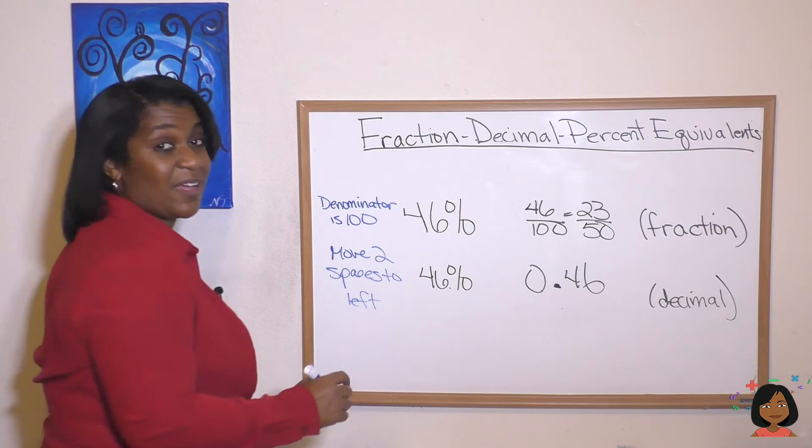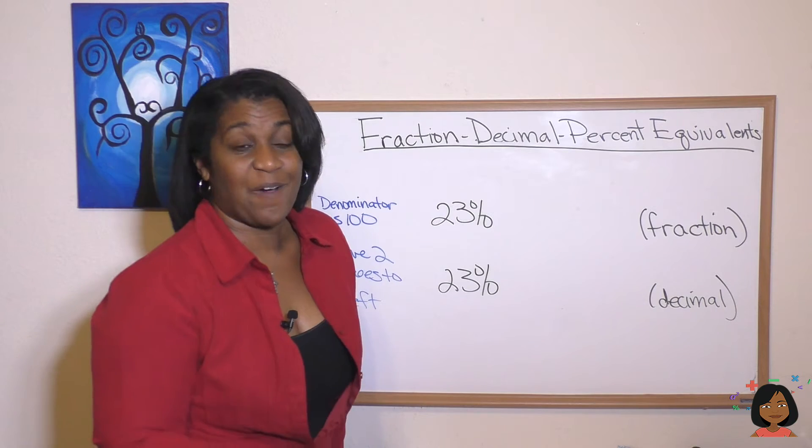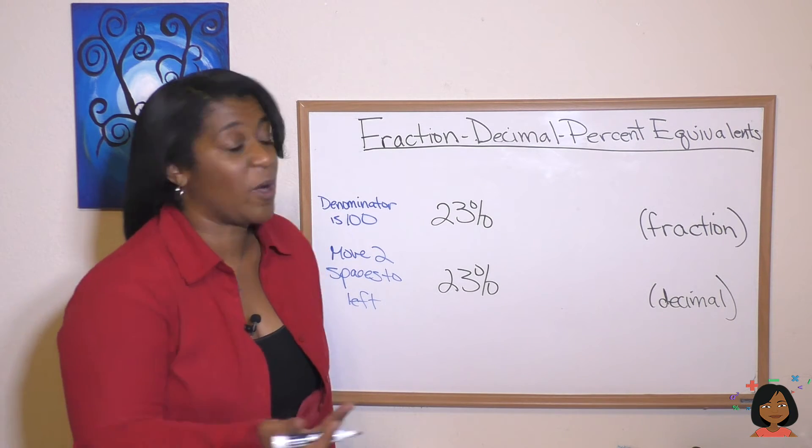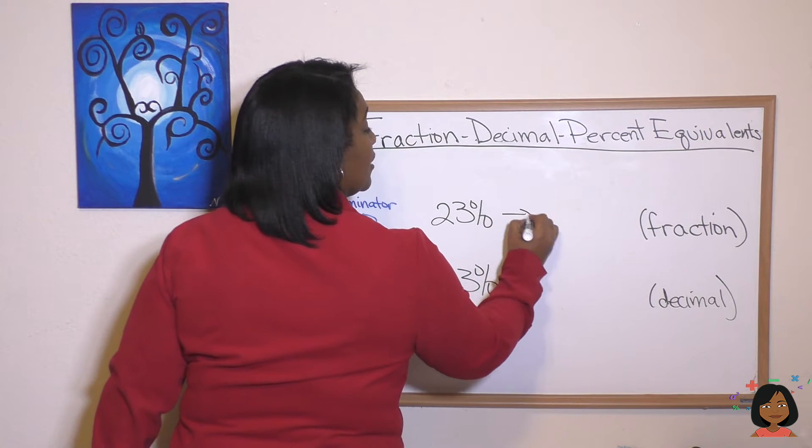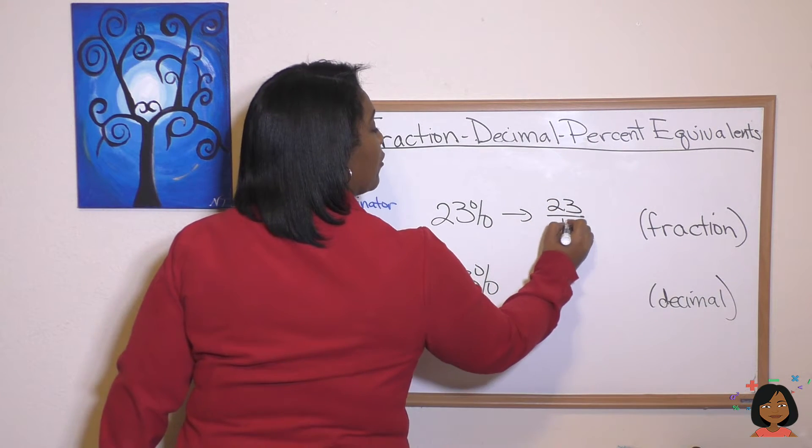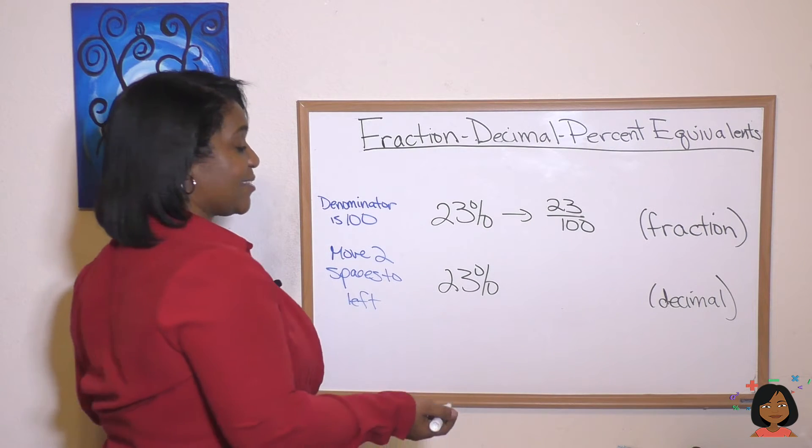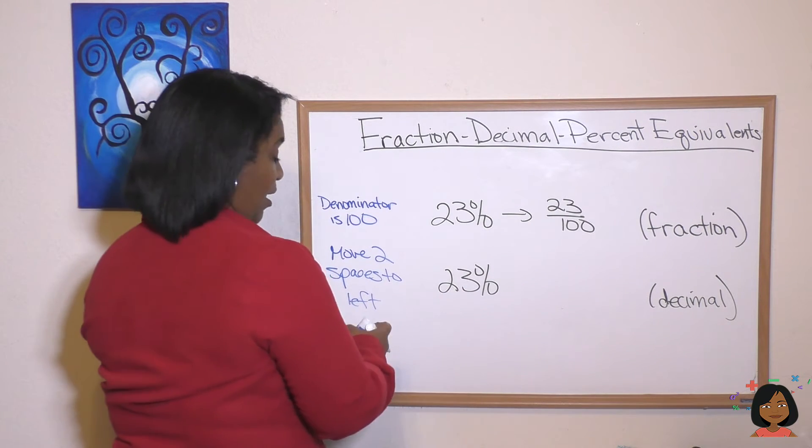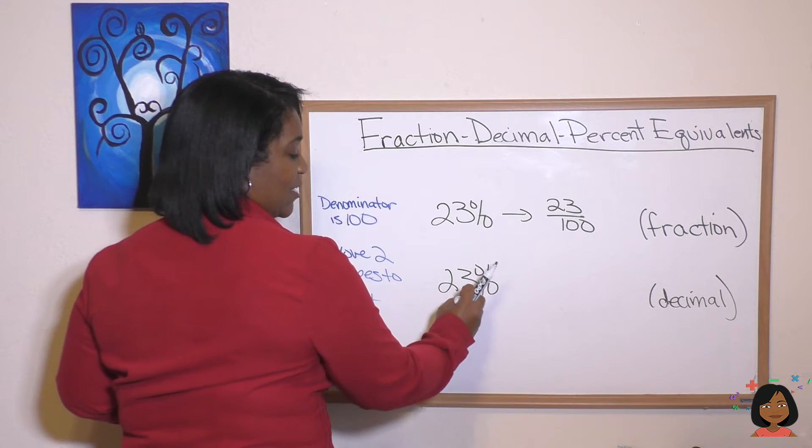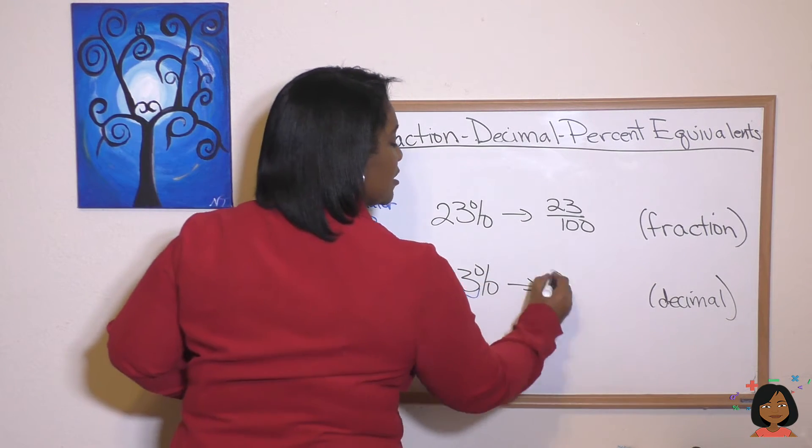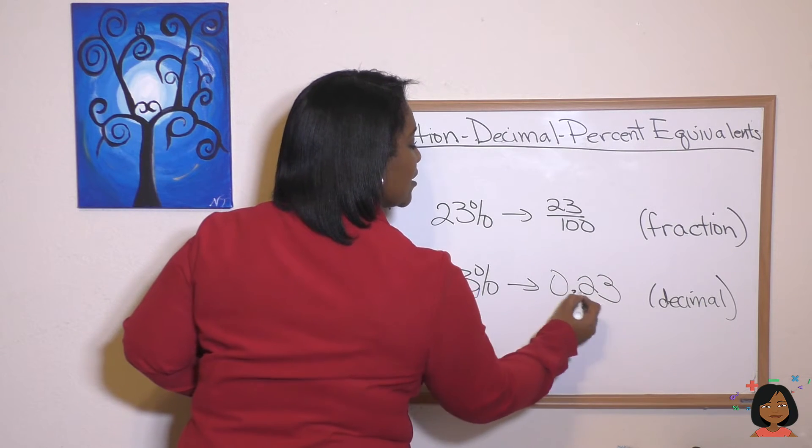Okay. Let's try it with a different percent. Here we go. 23 percent. We know as a fraction we're just going to put that over 100 and it's going to be 23 over 100. And that cannot be simplified. What about as a decimal? Again we move that decimal two to the left. So it's going to end up right there. And that means our answer is 0.23.